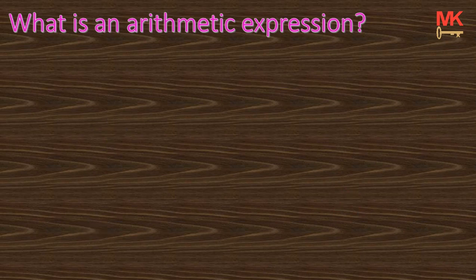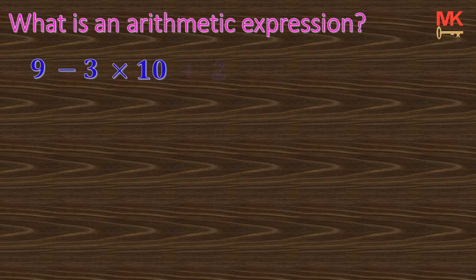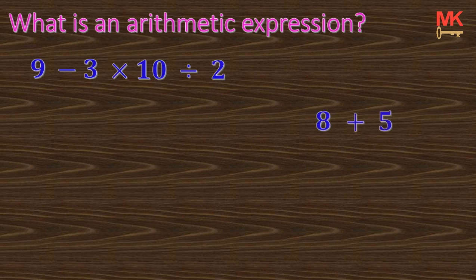Supposing we have the expression 9 take away 3 times 10 divided by 2. This expression is arithmetic because there is no letter. Similarly the expression 8 plus 5 times 3 is equally arithmetic because it doesn't also involve any letter.